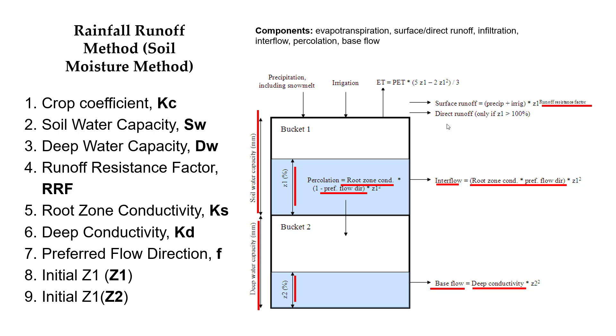It simulates processes such as runoff, interflow, percolation, or base flow. The surface runoff is controlled by the runoff resistance factor. The direct runoff only occurs if the root zone is saturated.